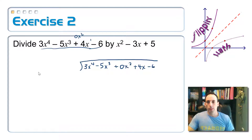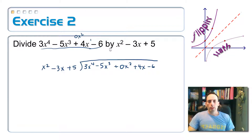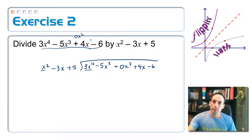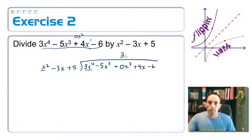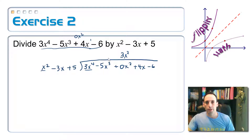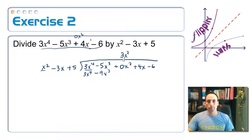This is going to be divided by x squared minus 3x plus 5. Now I ask myself, how many times does x squared go into 3x to the 4th? What do you have to multiply x squared by in order to get 3x to the 4th? I need a coefficient of 3, and then a difference in power of 2, so it must be 3x squared. I'm going to multiply the 3x squared times everything in the divisor. So 3x squared times x squared is 3x to the 4th, times negative 3x is minus 9x cubed, times 5 is plus 15x squared.